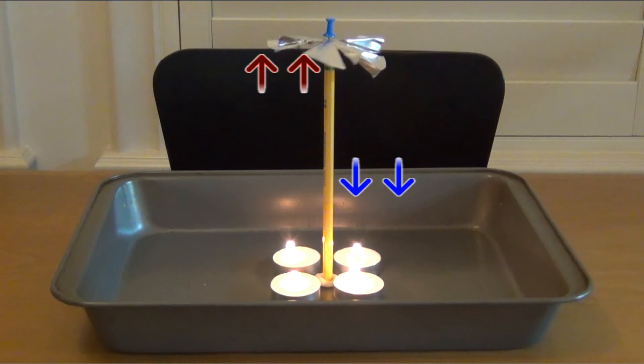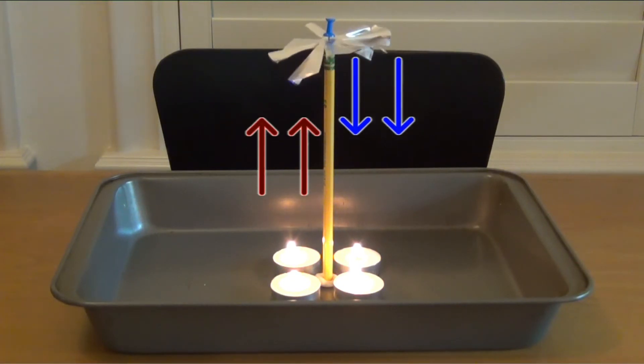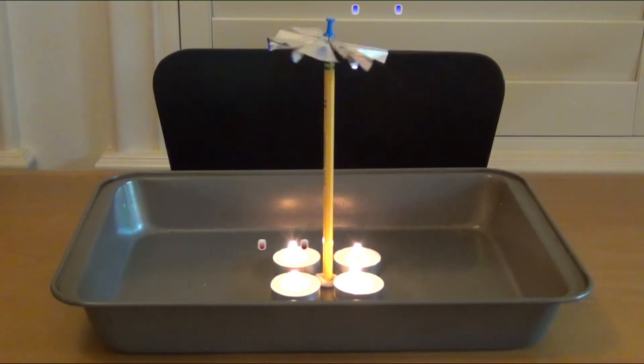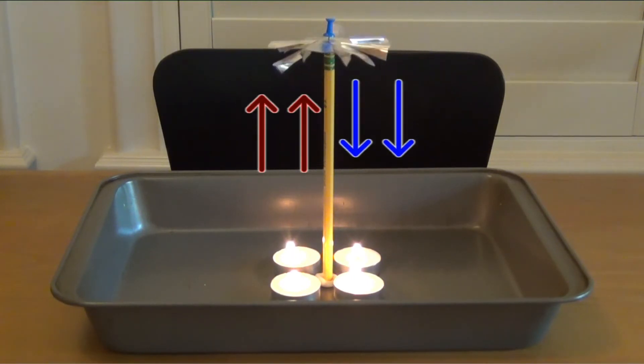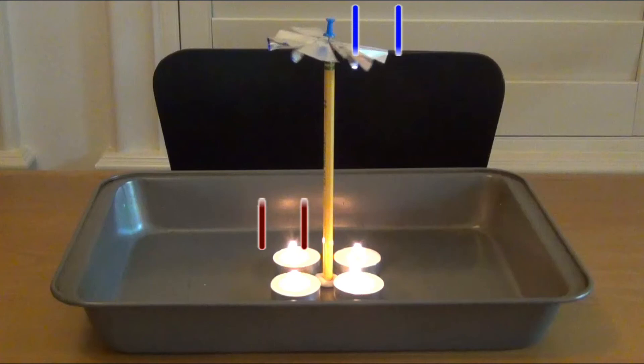As the warm air rises up above, it pushes against the bottom of the fan, and the cold air pushes the top of the fan as it sinks to the candle. The two of them work together to create an endless cycle in which the fan continues to spin.